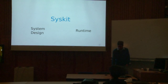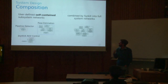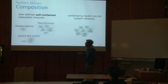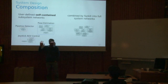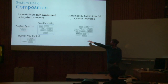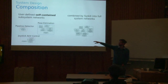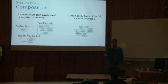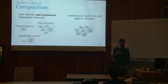On the system design side, you basically use Syskit — it's a DSL, an embedded DSL in Ruby, that allows you to define self-contained system networks. So you say, here I have my pipeline detector which is a two-component network, then this pose estimation which is a five-component network. They're all self-contained so you can run them as they are, and they're manageable by humans — four, five, six, seven components.